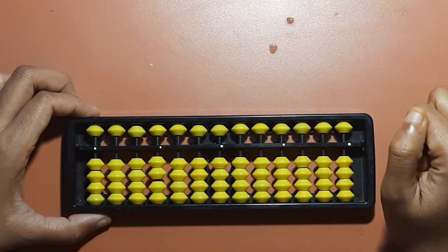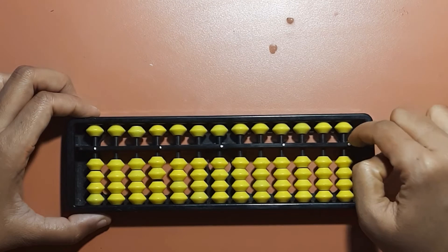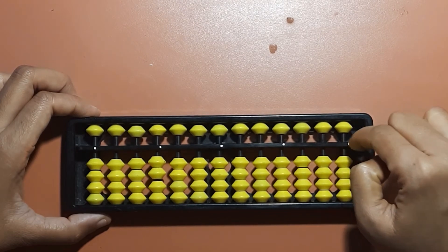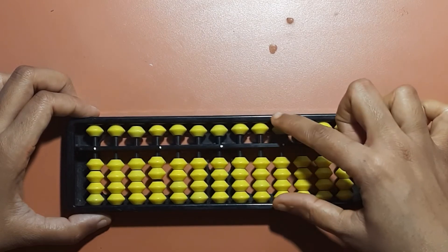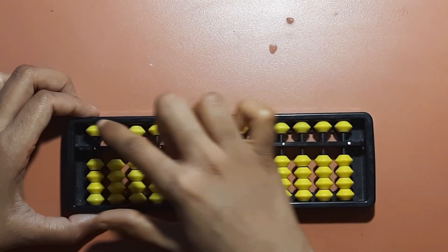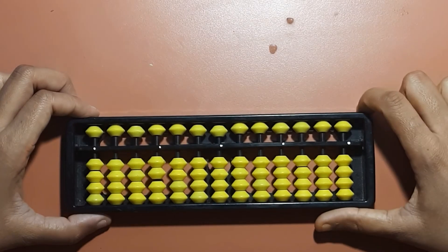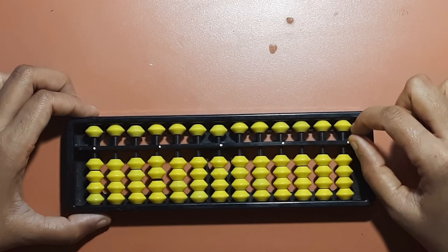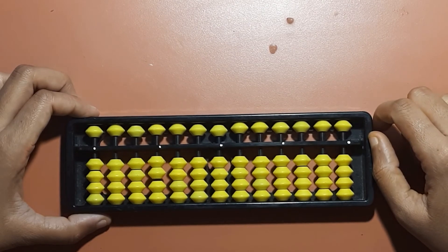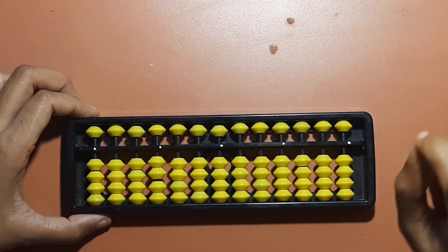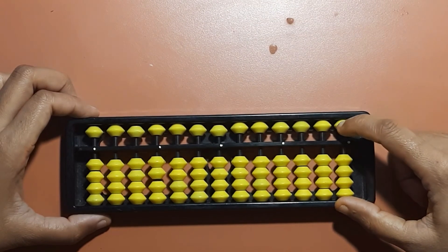The unit rod. Below the pointer is called the unit rod. This is the unit rod, this is the unit rod. What is a unit rod? A unit rod is where the numbers from 1 to 9 are represented, which gives you a single digit value. This is called the unit rod.